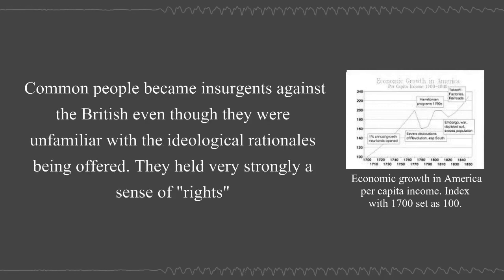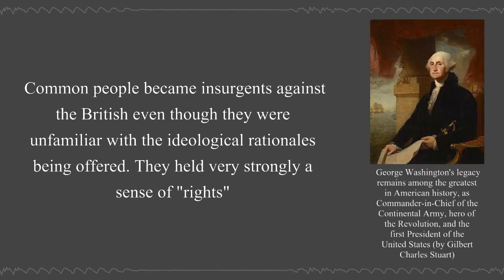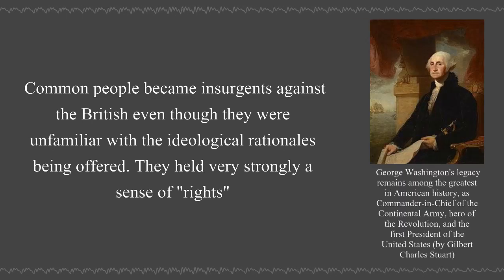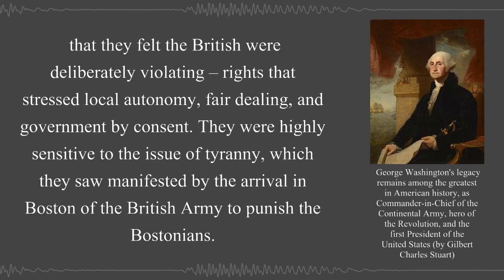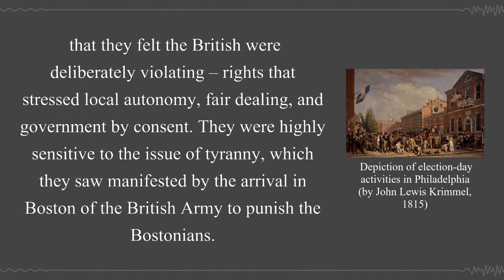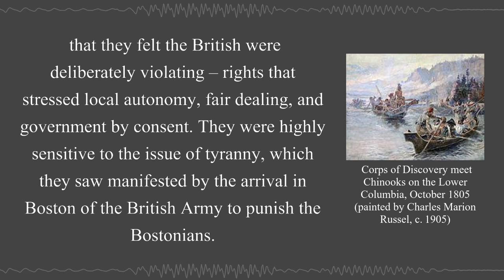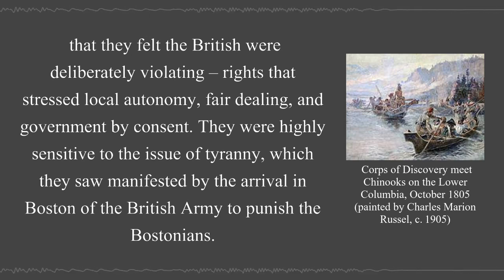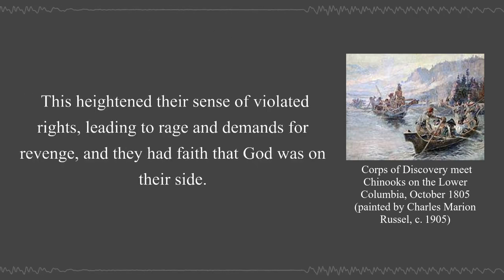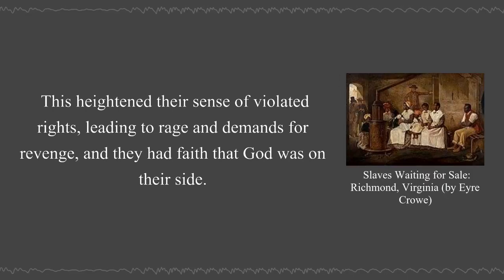Common people became insurgents against the British, even though they were unfamiliar with the ideological rationales being offered. They held very strongly a sense of rights that they felt the British were deliberately violating—rights that stressed local autonomy, fair dealing, and government by consent. They were highly sensitive to the issue of tyranny, which they saw manifested by the arrival in Boston of the British army to punish the Bostonians. This heightened their sense of violated rights leading to rage and demands for revenge, and they had faith that God was on their side.